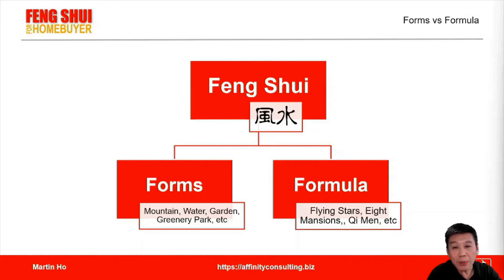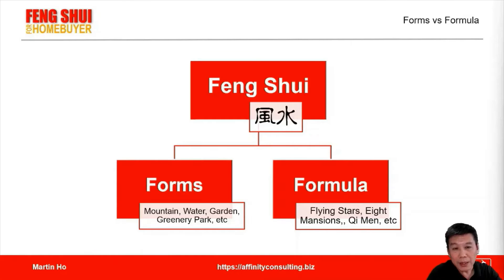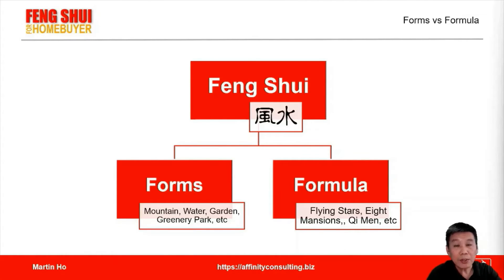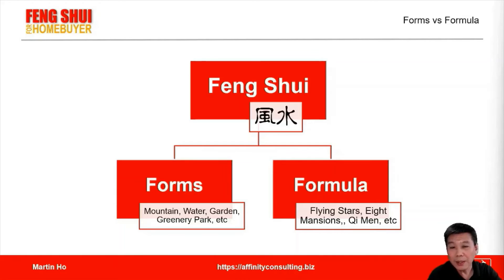Let me explain with an analogy. This is like cooking a plate of nasi lemak — there is a recipe and you need the ingredients, like coconut rice, the leaves, and especially the sambal. You may have the recipe, but without the ingredients you can't cook nasi lemak. Here, the recipe is the formula and the ingredients are the forms.